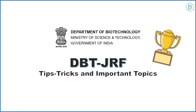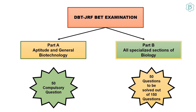Without any further ado, let us begin. The DBT-JRF exam is divided into two parts: Part A and Part B. Part A has general aptitude and biotechnology section questions, while Part B has all questions related to specialized sections of biology. In Part A you must solve all 50 questions, while in Part B you solve just 50 questions out of 150 problems, giving a lot of choice. Part B is a scoring section for most students.